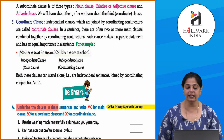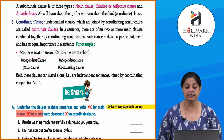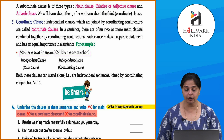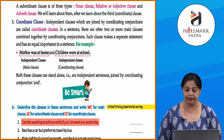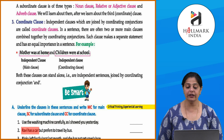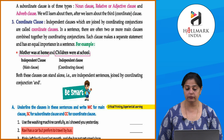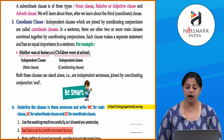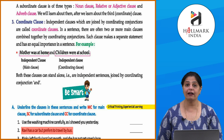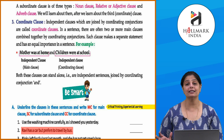Now, underline the clauses in these sentences and write MC for main clause, SC for subordinate clause, and CC for coordinate clause. 'Use the washing machine carefully as I showed you yesterday' — here 'as' joins the clause, making it a coordinate clause (CC). 'Ravi has a car but prefers to travel by bus' — 'prefers to travel by bus' does not make sense alone, so it becomes the subordinate clause here.